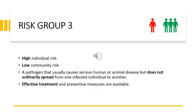Biological agents categorized under risk group three pose a high individual risk and a low community risk. This is a pathogen that usually causes serious human or animal disease but does not ordinarily spread from one infected individual to another. Effective treatment and preventive measures are available.